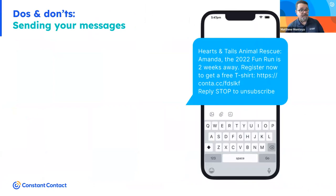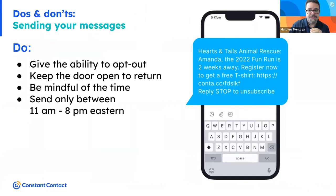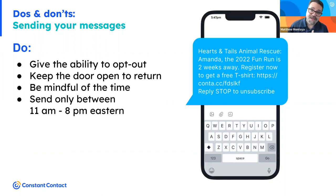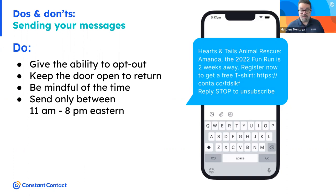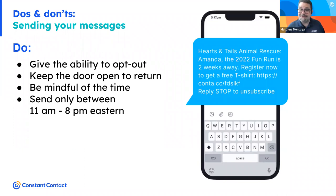Always give people the ability to opt out of text messages. Keep the door open for them to return — a tool like Constant Contact allows people to resubscribe if they opt out and want back in. Be mindful of timing: send only between around 11 a.m. and 8 p.m. Eastern. Don't rely on area codes to decide when to send — people keep their phone numbers when they move. I live in Florida but still have my Massachusetts area code, and this is very common.